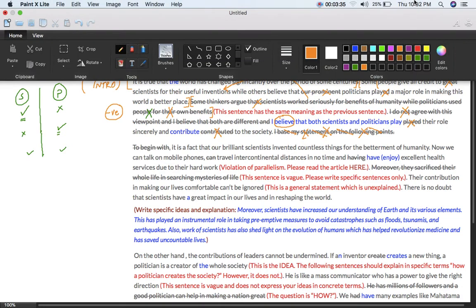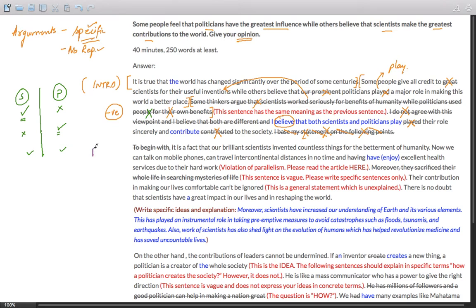Let us discuss body paragraphs. So this is body paragraph one. The student has begun with an idea and the idea is fine. What is better is the explanation is also fine. The first sentence should be an idea. Usually body paragraphs proceed in this way. There is an idea which is expressed in one sentence and there is an explanation of the idea. It may be more than or equal to one sentence. So what is the idea? It is a fact that our brilliant scientists invented countless things. This is an idea that they invented a number of things for the betterment of humanity. Now the next sentence should explain the idea. That is, it should explain what are those countless things and how they benefited.